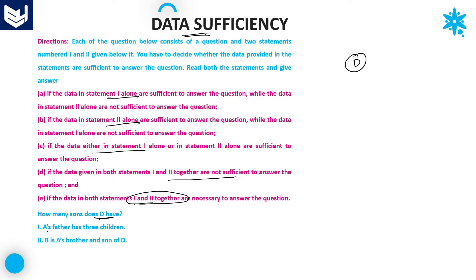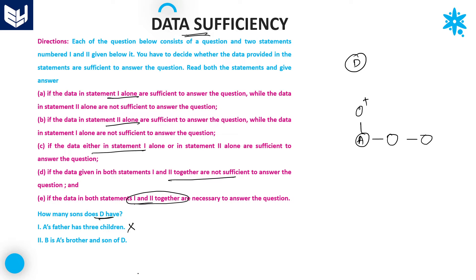Let's see the first statement alone. A's father has 3 children. A's father is this person on the diagram, and for this person there are 3 children — A is one child, and there are two more. From this diagram, we cannot say exactly how many sons D has, and we don't know who D is either. So you will not get the answer by using statement 1 alone.